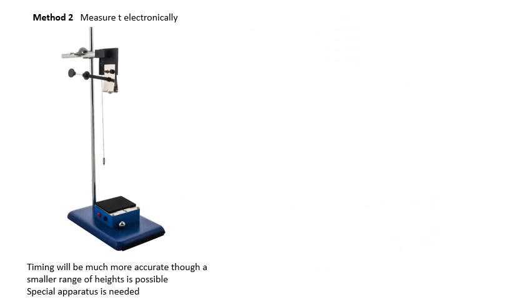Method two is measuring the time electronically. A metal ball is held by an electromagnet. When released, it falls and hits a pressure pad or switch at the bottom. When it lets go of the ball the timer starts, and when it hits the bottom the timer stops. Human reaction time doesn't come into it, so it's much more accurate. However, the range of heights is limited — probably 50 to 100 centimeters. There's also a small plumb bob to make sure the ball lands in the right place.